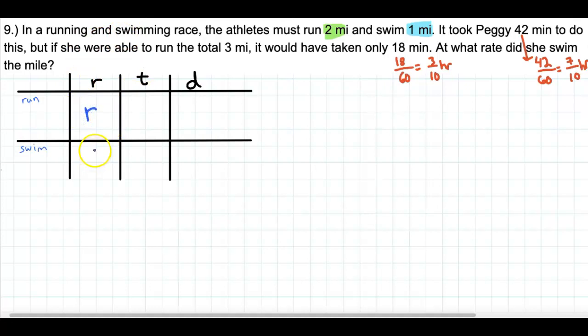I think we can find out the running rate pretty quickly. The distance that was run is 2, and the swim was 1. So the times, we don't know how much time was allocated to each.